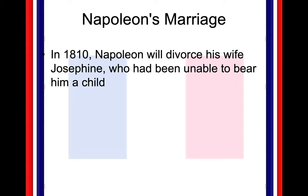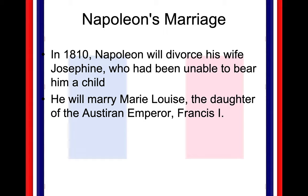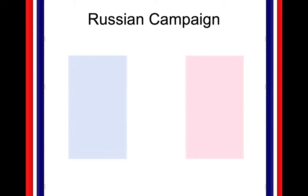Napoleon is also going to have some personal issues. Napoleon is going to divorce his wife Josephine, because she was unable to bear him a child — very much tidings of Henry VIII, if we remember the Tudors. He's going to marry the daughter of the Austrian empire, Marie Louise. Napoleon was very much trying to keep his line going and was trying to have an heir.